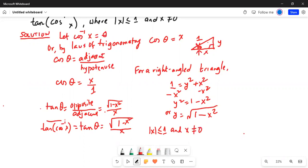Hence, this is the answer that we are looking for. The value for tangent of cosine inverse x, which is tangent of theta, which is square root of 1 minus x square by x.